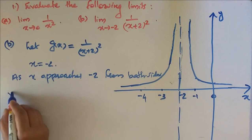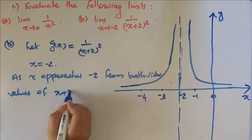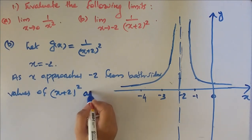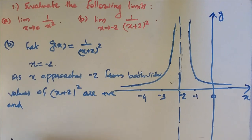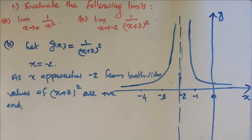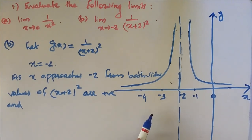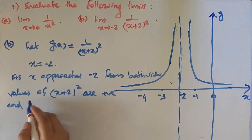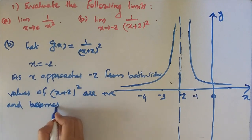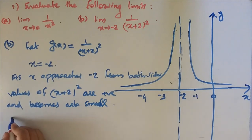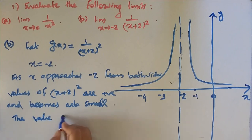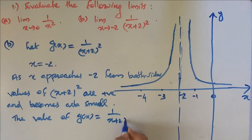From both sides, values of (x plus 2) squared are positive because it is squared. The values of (x plus 2) squared are positive and become arbitrarily small. Hence the value of g(x) grows large.